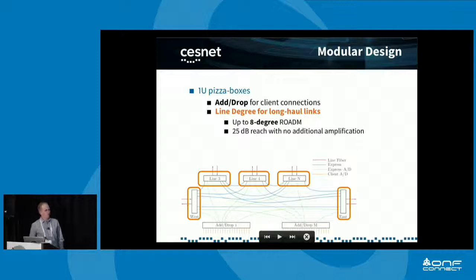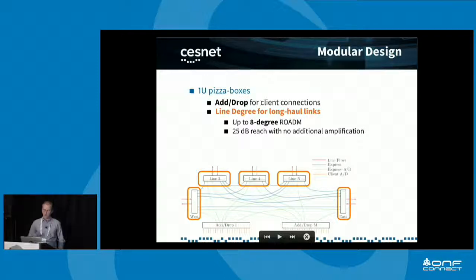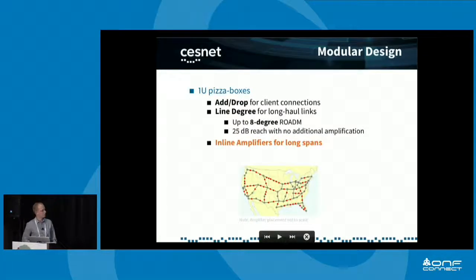The devices for line degrees and add-drops are slightly different. For example, we integrate amplifiers — boosters and preamps — for the long-haul connection. These devices can have a reach of up to 25 decibels of fiber attenuation, which is roughly 80 to 120 kilometers depending on fiber quality. If you need to span longer directions, you insert more inline amplifiers, up to a certain limit.